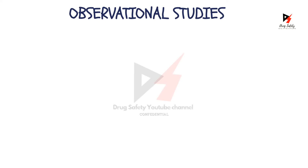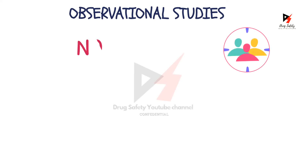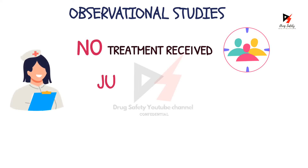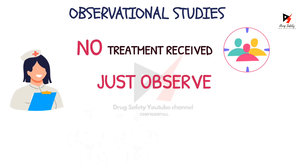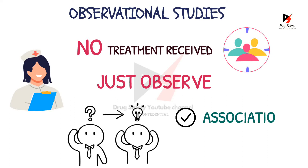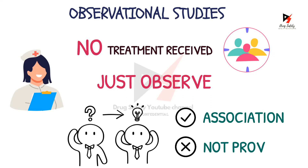In observational studies, participants of the study are not subjected to receive any new treatments or experimental procedures. The researchers in observational studies just observe and based on their observations they develop a hypothesis. Observational studies can discover associations between things but cannot prove that one thing causes another.